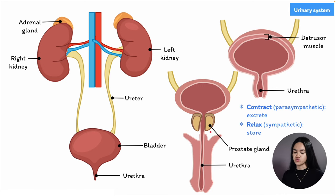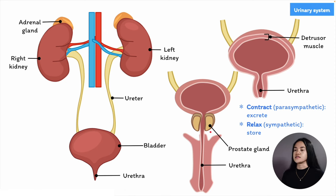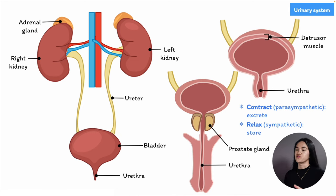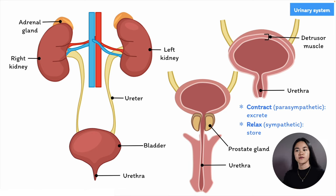This is why middle-aged to older men may have difficulty passing urine — as the prostate gland enlarges, the urethra may become partially blocked, preventing the flow of urine. So that's the overview of the urinary system: we have the kidneys, ureters, bladder, and urethra.